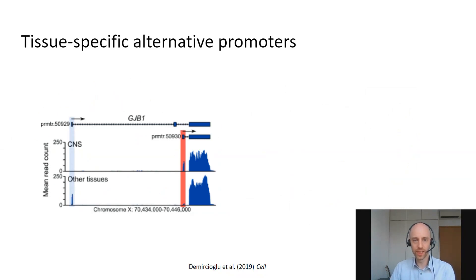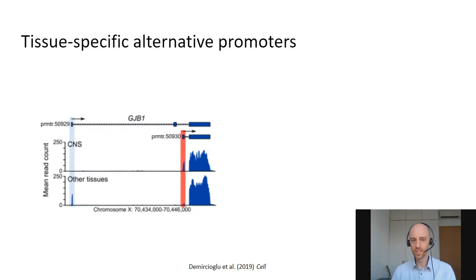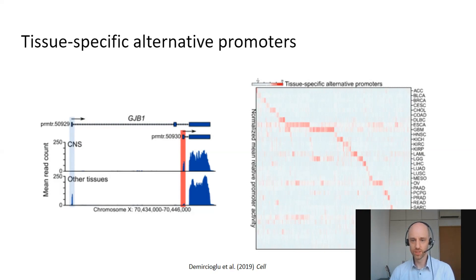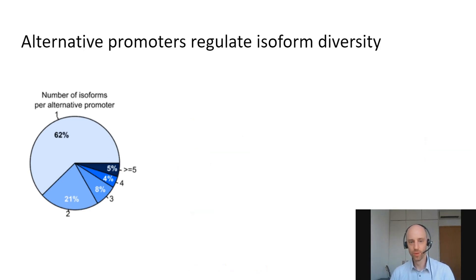To illustrate how that looks, I'd like to show this example of GJB1, which has two possible promoters. In the top line showing expression from the central nervous system, you can see these tissues use the second promoter, whereas all remaining tissues essentially use the first promoter. There's a very clear distinction in which promoter is used. But if you look at the overall expression level, the expression is essentially very similar — so if you would just look at gene expression you would not see any difference. By looking into promoter activity, we can see a very clear change that might have functional consequences. We observe many more such examples — alternative promoters used specifically across all the tissues we studied that do not show any change in overall gene expression.